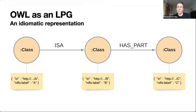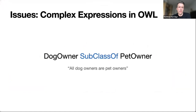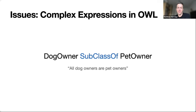I'm going to talk about some of the issues in representing OWL in labeled property graphs and illustrate some of the design choices we made when designing our OWL-to-LPG mapping. Ultimately, OWL has several features that prevent us from using an idiomatic approach. OWL allows complex class expressions anywhere where we can use class names. For example, 'dog owner is a subclass of pet owner' — a simple axiom where A is a subclass of B. But OWL allows complex class expressions on either side.